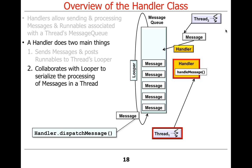Once messages or runnables have been given to the handler, it sits in collaboration with the looper to serialize the processing of messages in a thread. You're running in a handler thread somewhere in a looper calling looper.loop. As we looked at before, looper.loop pulls messages out of the message queue, and as soon as it gets a message, it tells the message to find its target — which is the handler — and have that handler dispatch the appropriate thing.